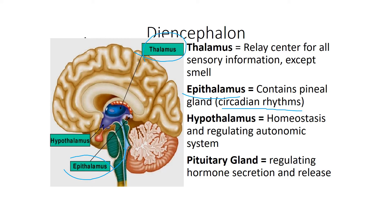Next we have the hypothalamus, which is that stalk that connects the thalamus to the pituitary gland. The hypothalamus is important for maintaining homeostasis, such as hunger and thirst, regulation of body temperature, regulation of sleep and wakefulness, sexual arousal and performance, and emotions of fear, anger, pain, and pleasure. A majority of our hormones are also produced there.